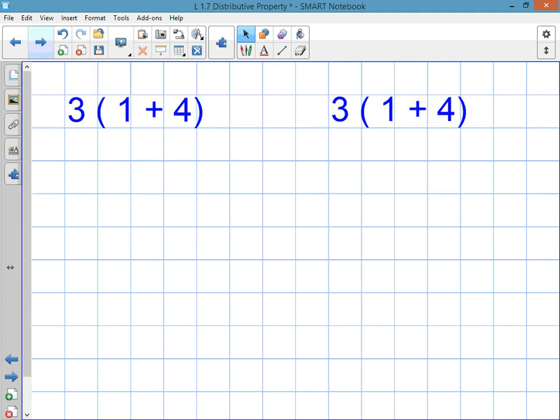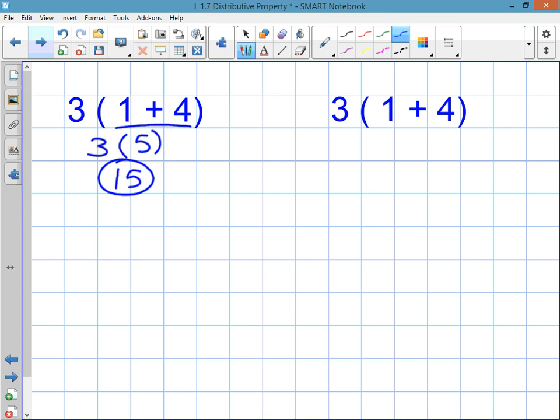If I give you an expression that looks like this, 3 times parentheses 1 plus 4, most of you would just say oh look there's parentheses, I'm gonna add 1 plus 4 together and then I multiply 3 times 5 and get 15 and that's the correct way to do it. You might also notice though that there's a 3 on the outside of a set of parentheses and this indicates that you're going to use the distributive property.